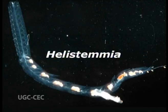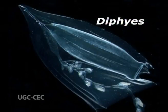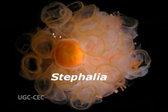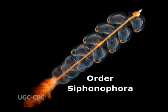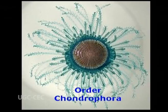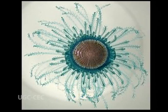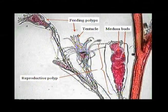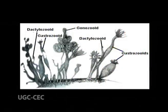In swimming or floating colonies like Halistemma, Diphyes, Stephalia and Physalia of the order Siphonophora, and Velella and Porpita of the order Chondrophora, extreme cases of polymorphism are observed. Both polypoid and medusoid stages are observed in the same individual and they are specialized for various functions. Now we have a clear idea that polyps are sessile forms and medusae are free swimming forms and they perform varied functions.